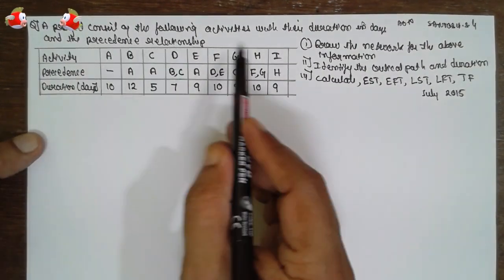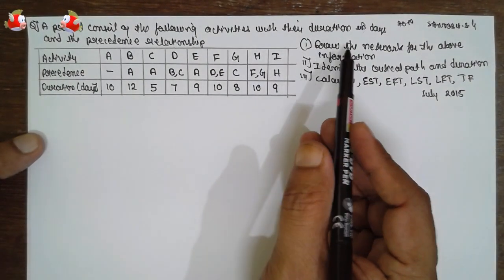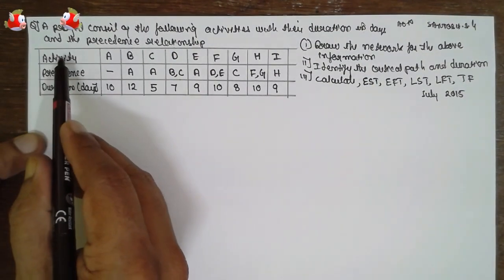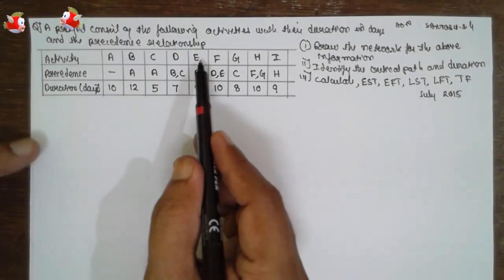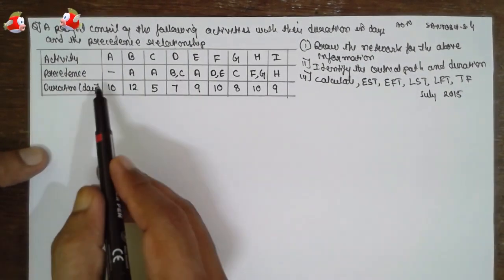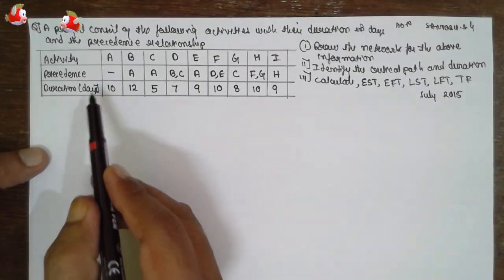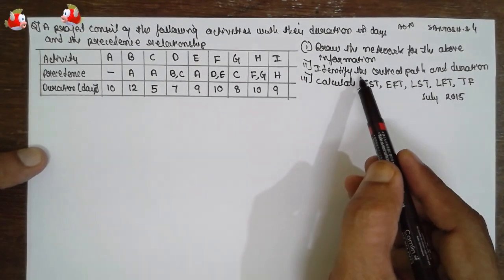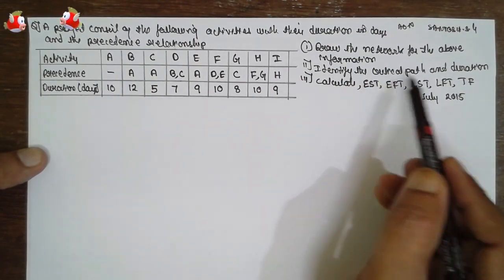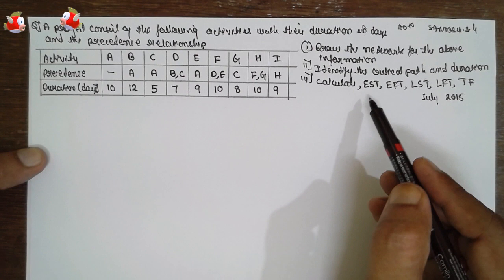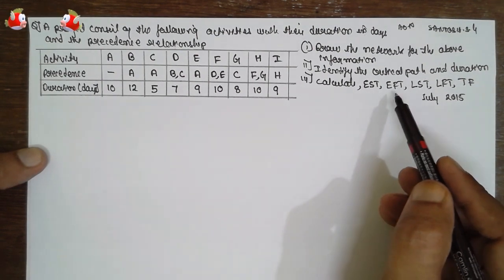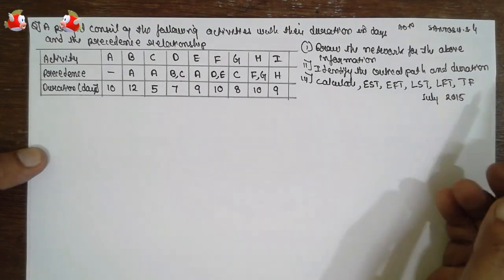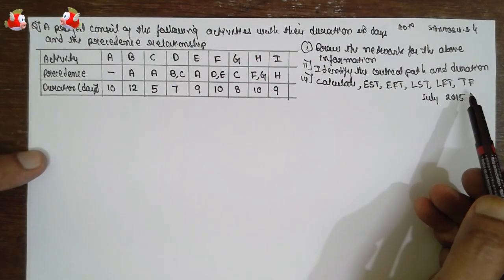This is the project consisting of the following activity with the duration in days and precedence relationship. They have given the activities, precedence, and duration. We have to find out the network and identify the critical path. We have to calculate earliest start, finish, latest start and finish, and total float.